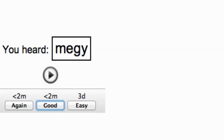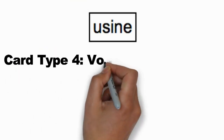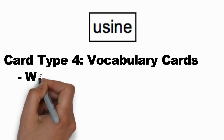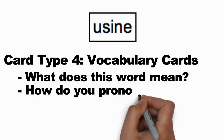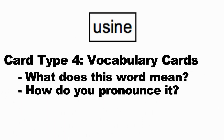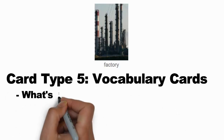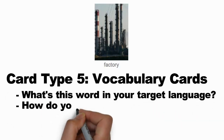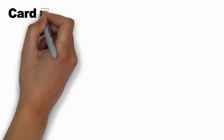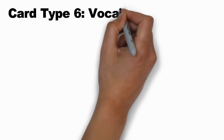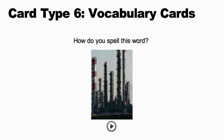The final three flashcard types are simple vocabulary trainers. One card will show you a word and ask you to remember what it means and how to pronounce it. Another will show you a picture of that word along with its translation — you'll need to remember how to pronounce that word in your target language. The last card will show you a picture of that same word and play a recording — you'll need to remember how to spell it in your target language.